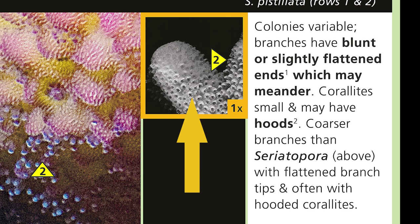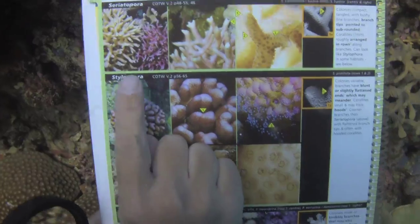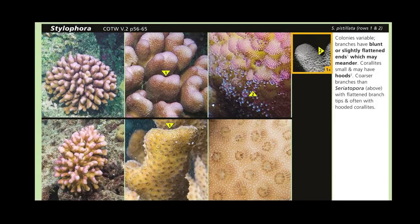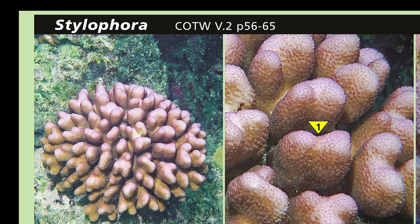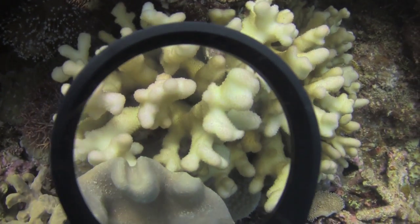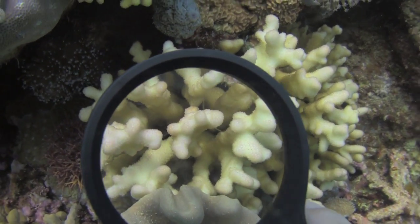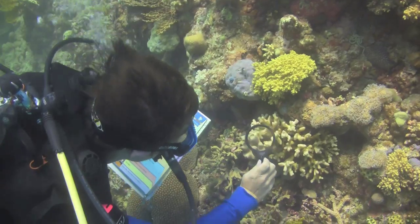Throughout the Coral Finder, true scale is indicated by the images in the yellow boxes next to the text description. With your scale confirmed, read off the name on the left-hand side of the page — this is the name of the coral genus. Next to the name, you will see a cross-reference to the relevant volume and page number in Corals of the World. If you want to learn more about this coral, use the slate on the back of the Coral Finder to note the coral's name, Corals of the World reference data, and the Coral Finder page number.